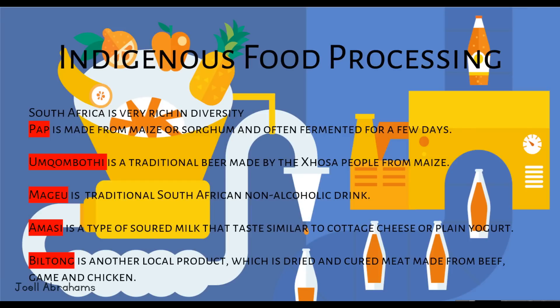South Africa is very rich in diversity. Pap is made from maize or sorghum and often fermented for a few days. Umqombothi is a traditional beer made by the Xhosa people from maize. Makhay is a traditional South African non-alcoholic drink. Amasi is a type of soured milk that tastes similar to cottage cheese or plain yogurt. Biltong is another local product which is dried and cured meat made from beef, game and chicken.